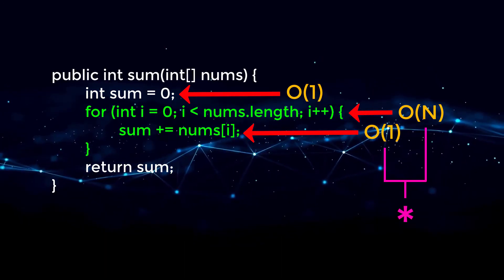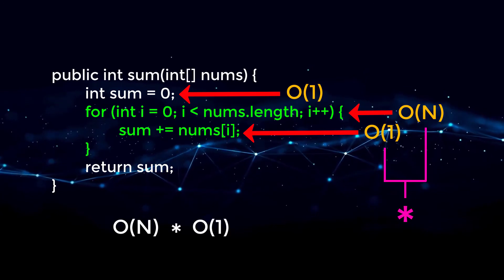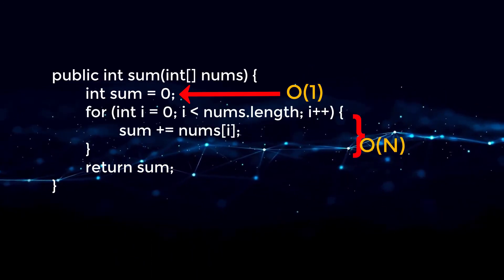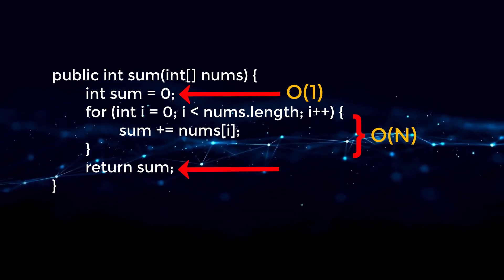So for this for loop, we're going to do Big O of n times Big O of 1. So we are just left with Big O of n. And then finally, our return statement is constant time.